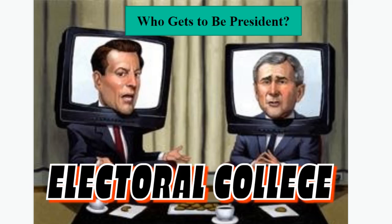We are in Chapter 10, Section 3, talking about the process of how we select the President of the United States. This specifically is talking about the Electoral College. Two people up there: on the left side is former Vice President Al Gore, on the right side is former President George Bush. They ran against each other in the 2000 election, which was very, very tight.